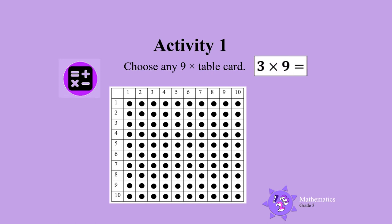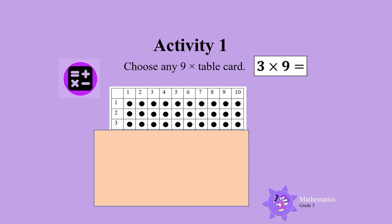Use two sheets of paper to show the array for the number sentence. Cover everything below the row labeled 3 with one sheet of paper. Then cover everything to the right of the column labeled 9 with the other sheet of paper. Now count the dots.